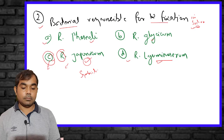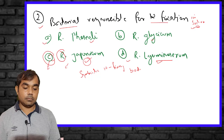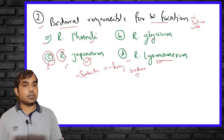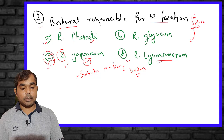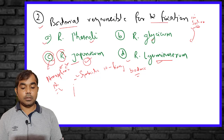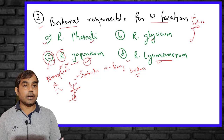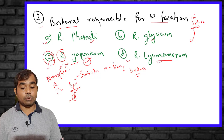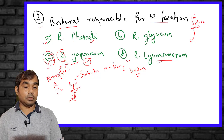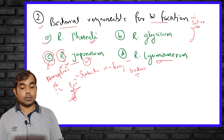Rhizobium is a symbiotic nitrogen-fixing bacteria — both the host and the bacteria get mutual benefit. Soybean supplies photosynthates to Rhizobium japonicum, and Rhizobium japonicum fixes atmospheric nitrogen and supplies it to the soybean through nodules. R. phaseoli is associated with beans and R. leguminosarum with pea.